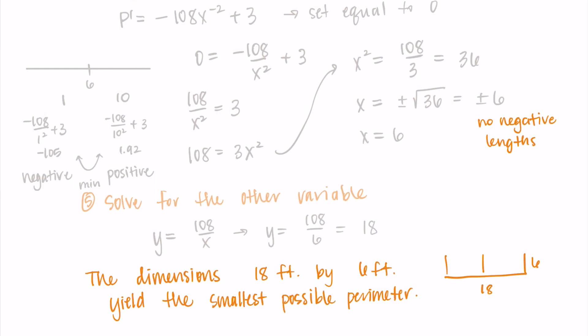So we have successfully found the smallest possible perimeter for our chicken coop given the constraints on area. Remember, we follow these same steps every time we do an optimization problem. The setup just might be a little different depending on the situation.